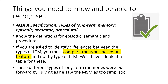The things you need to know and be able to recognise: I've included your AQA specification point which is types of long-term memory — episodic, semantic and procedural. If you are asked to identify differences between types of long-term memory, you must compare the types based on feature and not by type of long-term memory. Have a look at that a bit later in this presentation because I've got a table to illustrate that. You also need to know that these different types of long-term memories were put forward by Tulving, as he saw the multi-store model as too simplistic.